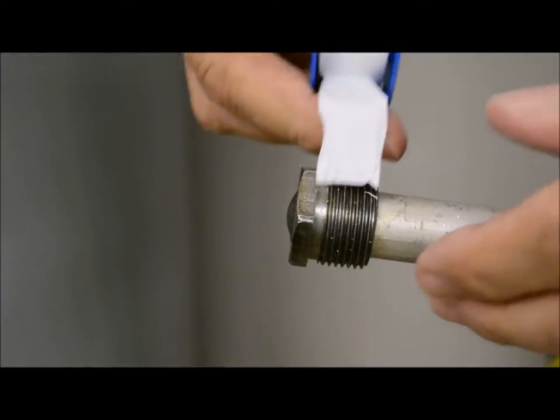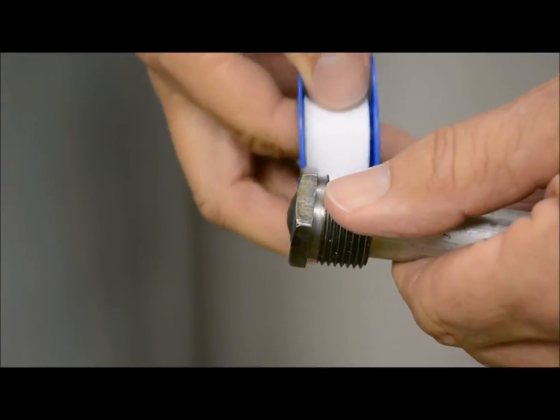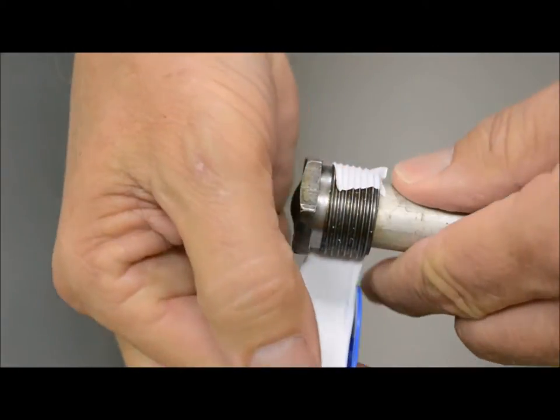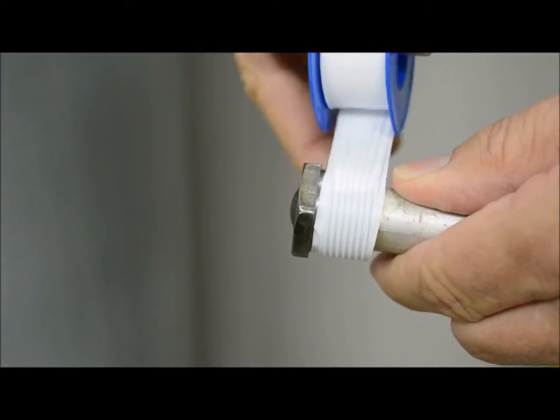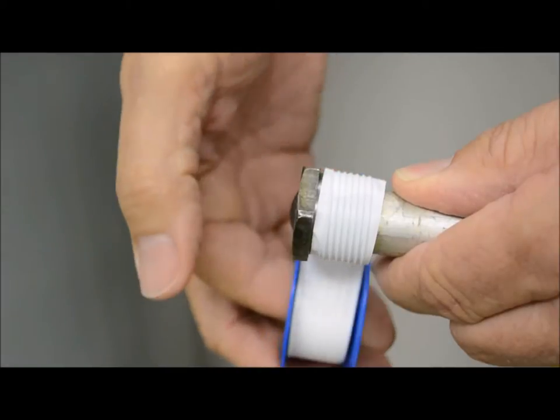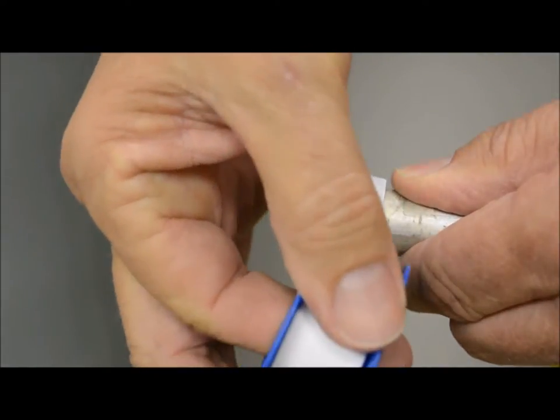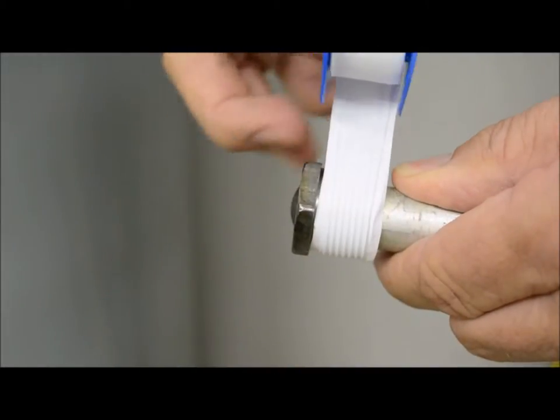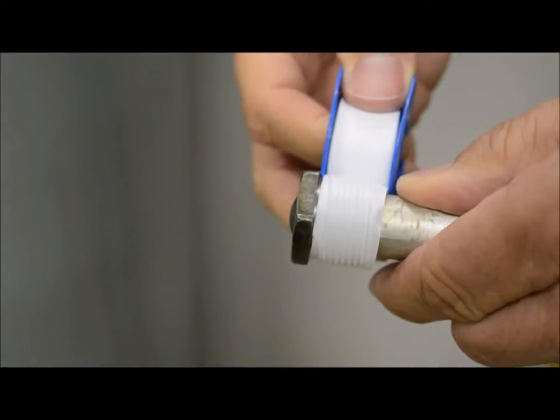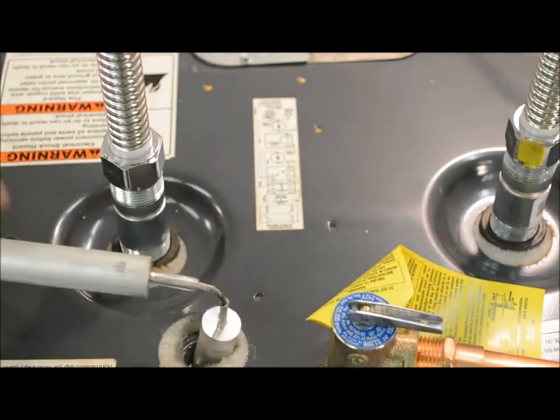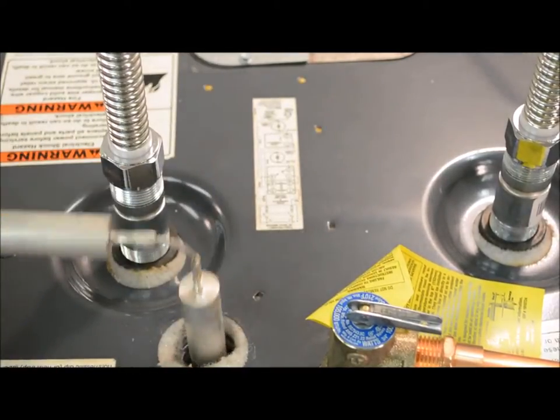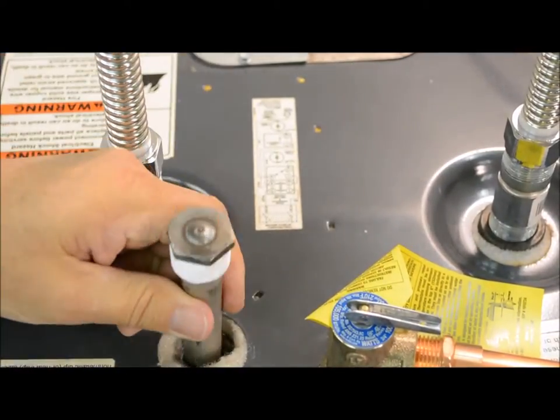Take the thread sealant and apply generously to the threads. Lower the new flexible anode rod into the tank. Make sure it doesn't touch the bottom. If it does, cut it off approximately 2 inches short of the bottom.